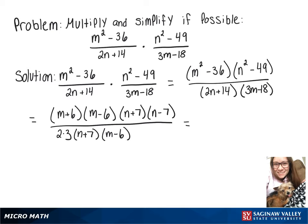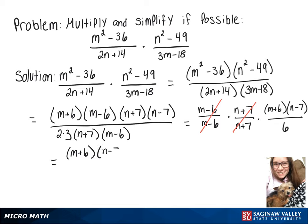To cancel some things out, we can rewrite this as m minus 6 over m minus 6 times n plus 7 over n plus 7 times everything that's left, so m plus 6 times n minus 7 over 2 times 3, which is 6. And now these will cancel out because they're equal to 1, so that leaves us with m plus 6 times n minus 7 over 6, which is one way to write it.